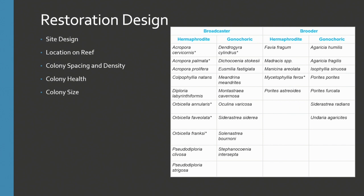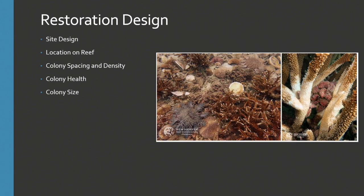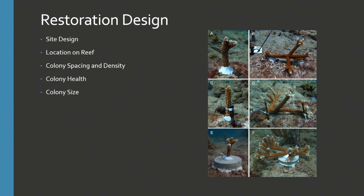We also discuss the difference in reproductive mode of species and how that influences spacing and density of outplanted corals. We have a table for Caribbean species with literature supporting specific species decisions. On colony health, this applies in both directions — how healthy is the reef site and its existing colonies, but also how healthy are your corals when you remove them from the nursery. We suggest not removing unhealthy colonies, as outplanting unhealthy corals can reduce restoration success. We also go into colony size — whether you're using microfragments or planting larger colonies depends on your program goals, and we provide guidance on selecting the appropriate colony size.